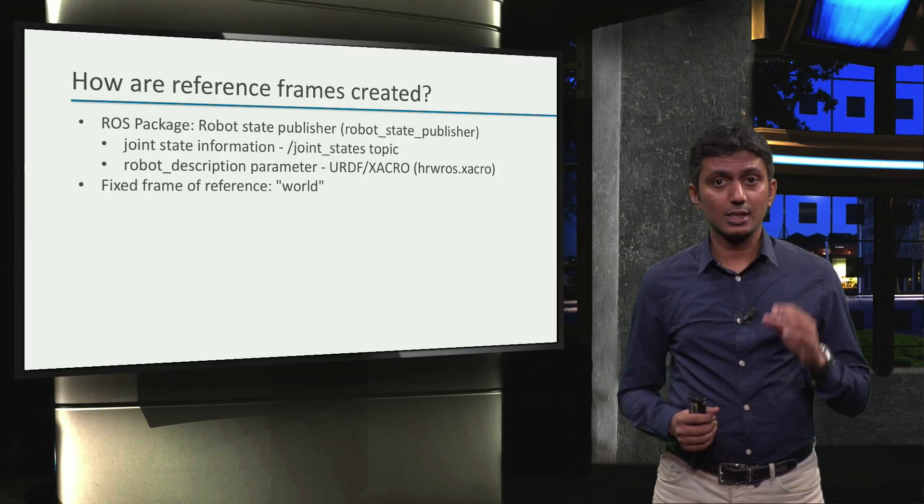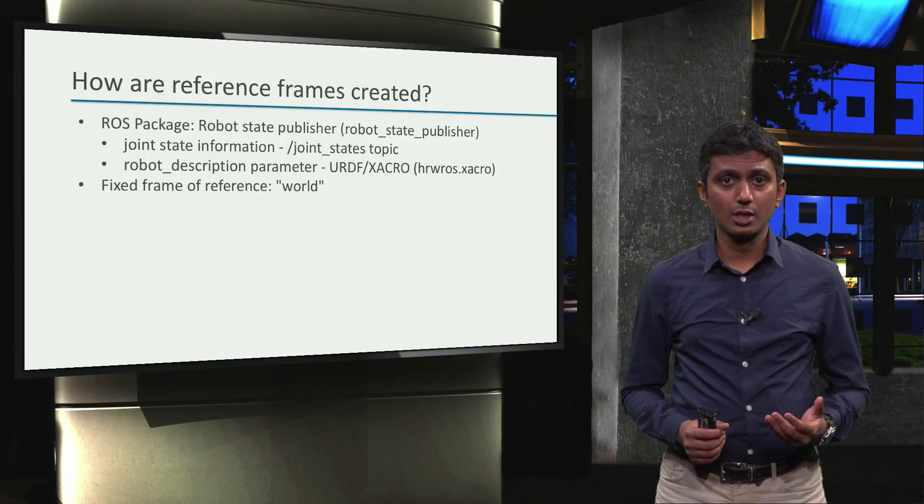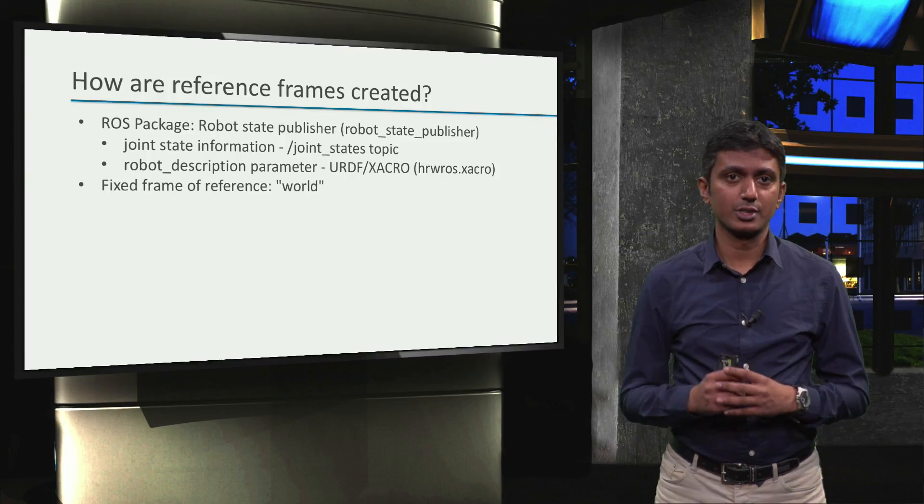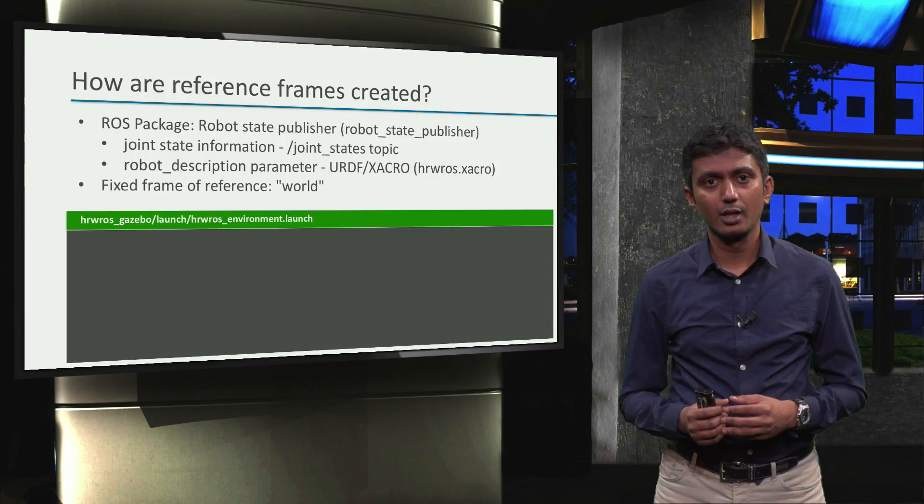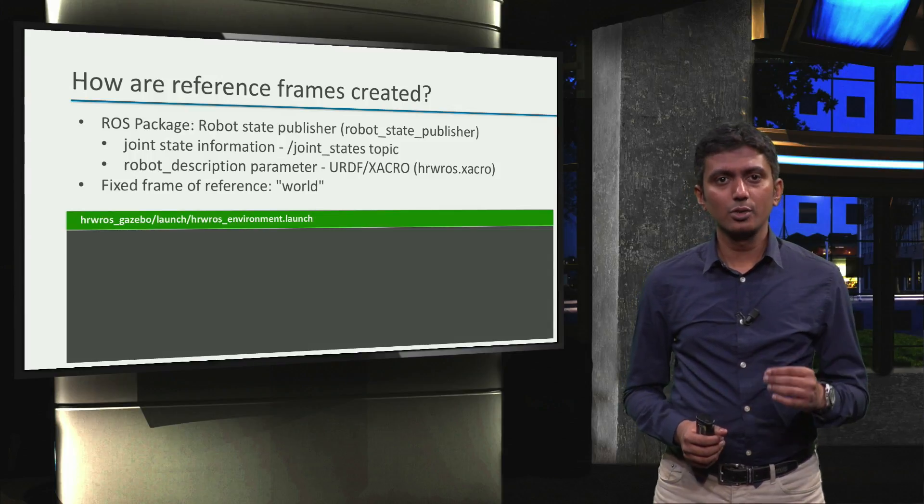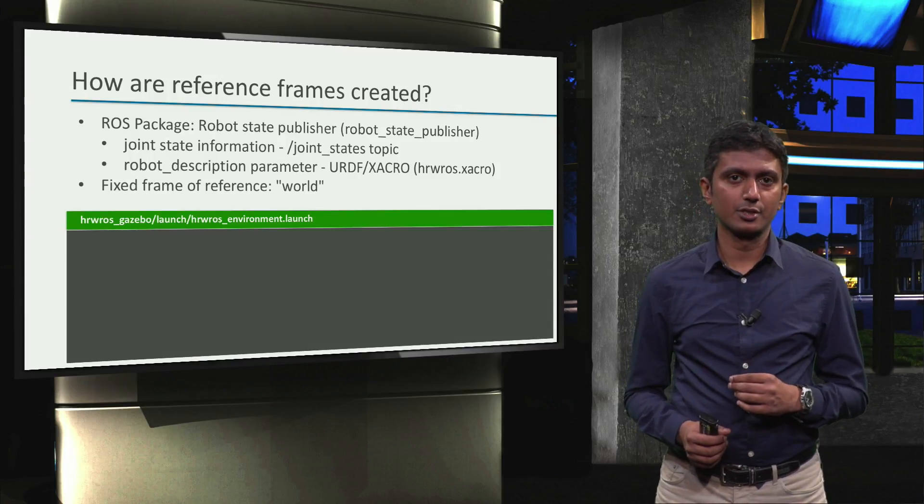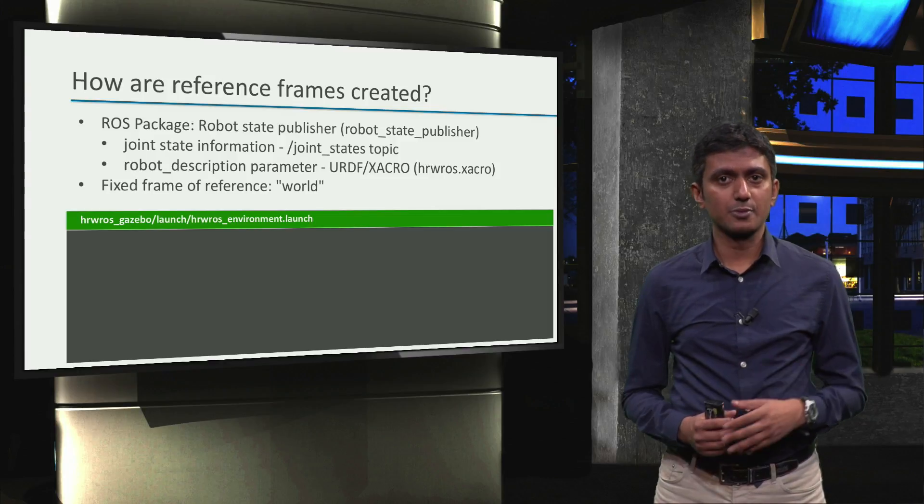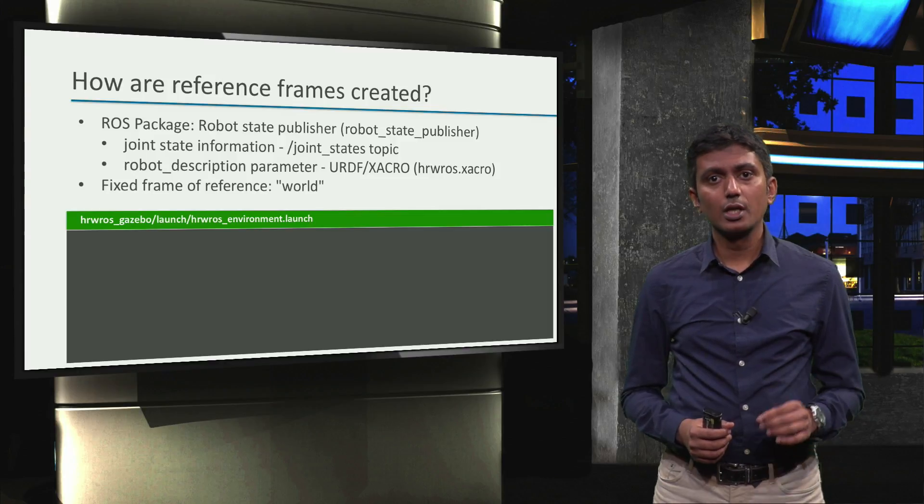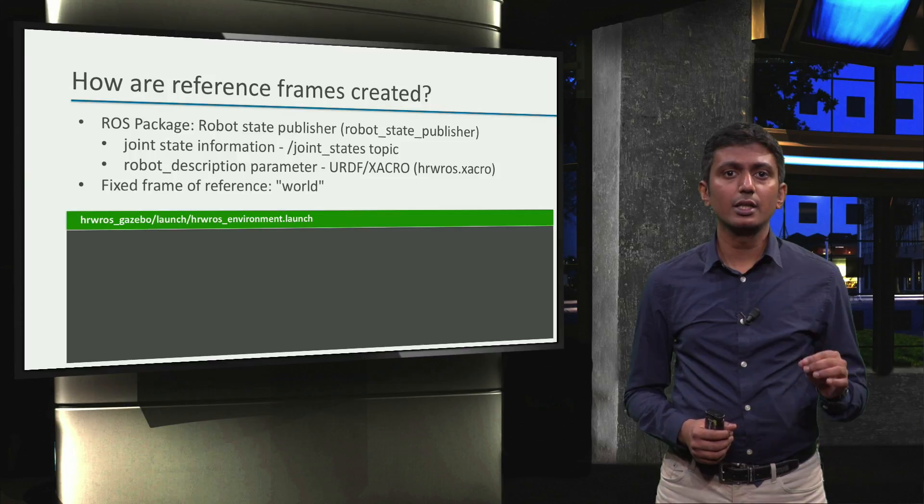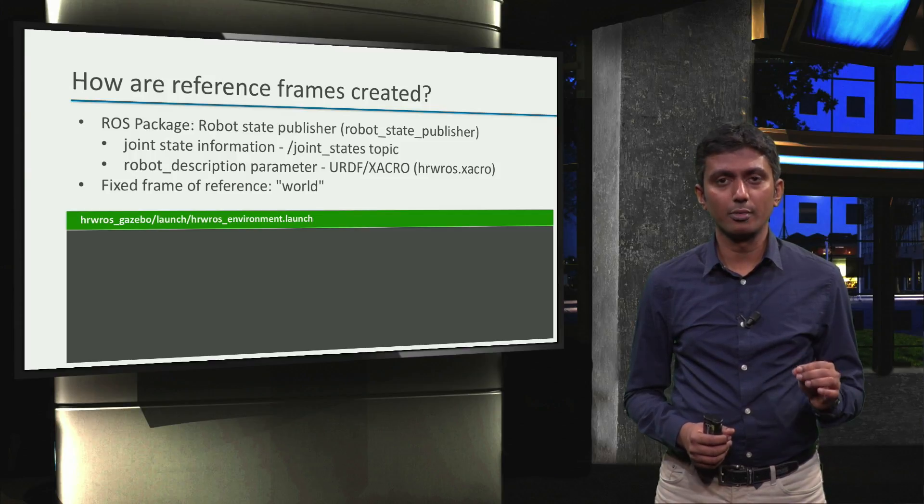Further, it is our responsibility as users to arrange for the information required by the RobotStatePublisher package. Let's first see how the joint state information can be arranged for. In the code files provided to you for this week, you can find this snippet in the hrwros_environment.launch file.